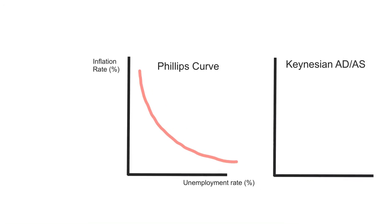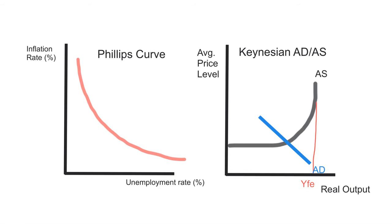Let's switch over to the Keynesian ADAS diagram. If you look at where we are on the ADAS diagram right here, we are below full employment output, which is over in the vertical part of the AS curve. Correspondingly, we also have little pressure on the price level. This is a static graph, but you can intuit that there's a lack of pressure on the price level. So does the government have a menu of choices of where to be on this Phillips curve?